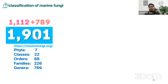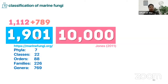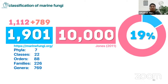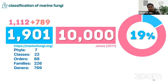We have 789 from the previous report. When we compare to the estimated number of marine fungi, we only know 19% of marine fungi — and that's quite interesting. If you wanted to be part of us that's working on the classification of marine fungi and finding new species in marine environments, you can join our lab. I'm inviting all of you.